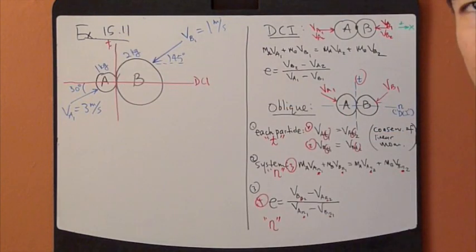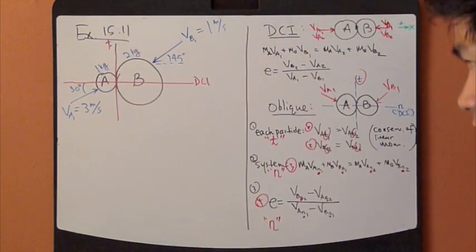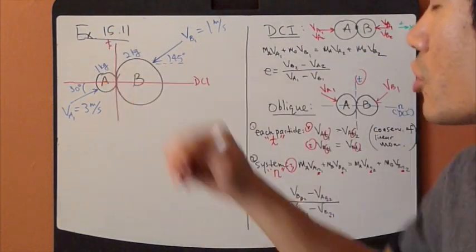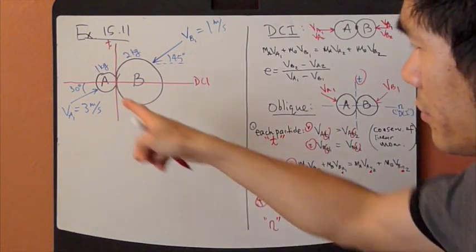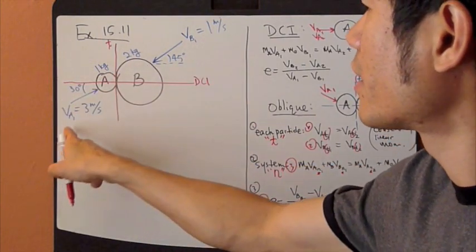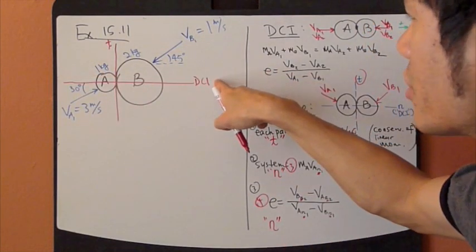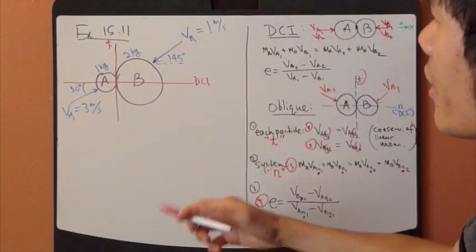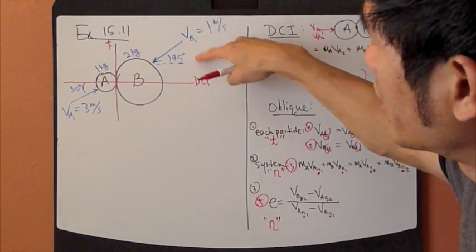Let's look at an example. This is an example shared in the textbook, example 15.11. So you have two particles, a game of pool. And particle A is coming this way at a 30 degree angle from the horizontal direction, which is called the DCI direction.